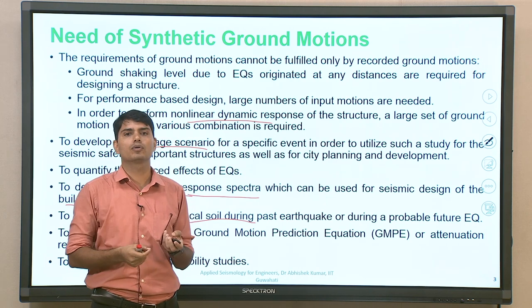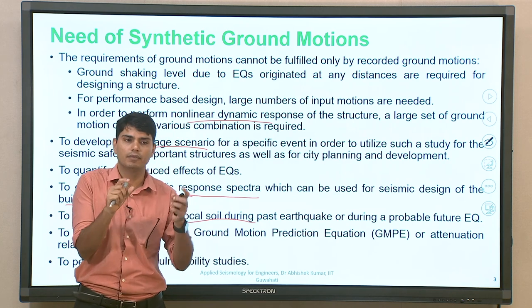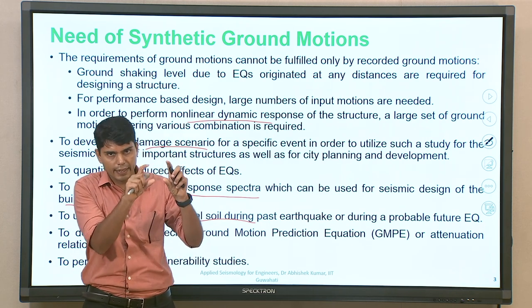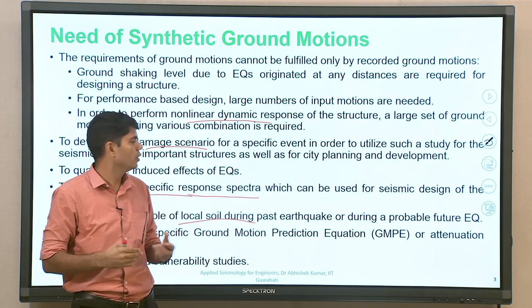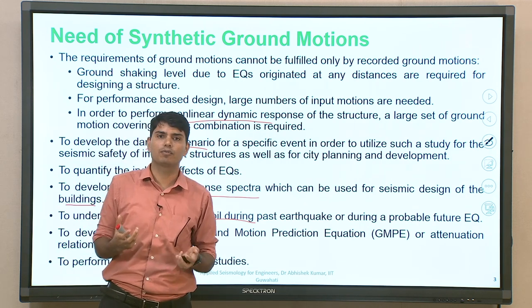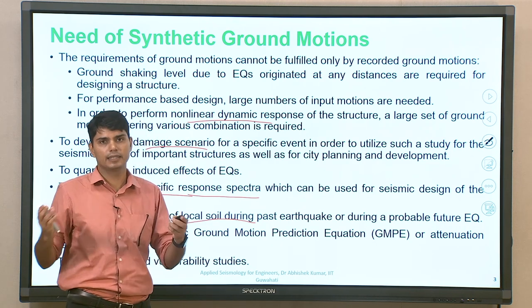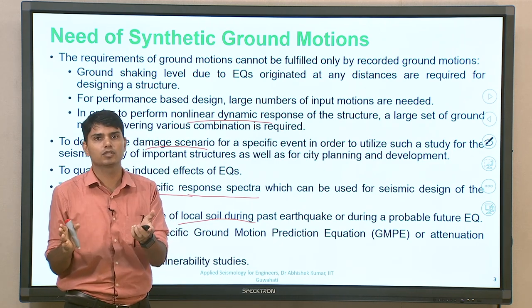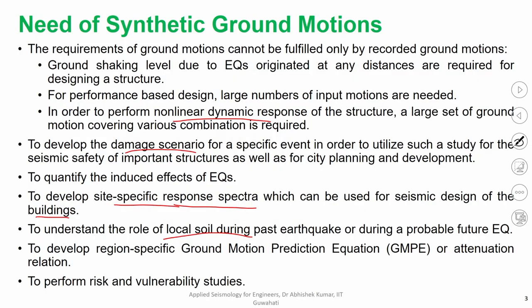In order to find out how amplification during different earthquakes is happening at particular local soil, we need to understand what is the local soil and what the ground motion is. If exposed to just one or two input motions, we will not be touching upon the entire range of amplification which the soil can undergo at different amplitudes of ground vibration. So for this also, we have to have a larger dataset, and since it is not available, we can go with ground motion simulation.